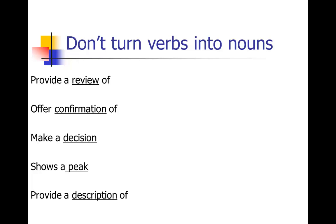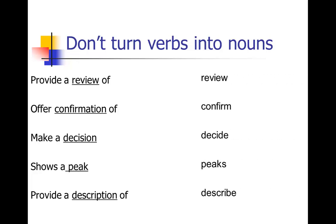Here are more examples that crop up all the time in the scientific literature. People will say: 'it provides a review of,' 'it offers confirmation of,' 'make a decision,' 'shows a peak,' 'provide a description of.' Again, these are all nice spunky verbs — review, confirm, decide, peak, describe — that have been turned into nouns and paired with a really boring verb: provide, offer, make, show, provide. So turn those all back into the nice spunky verbs: review, confirm, decide, peaks, and describe.